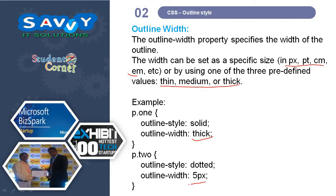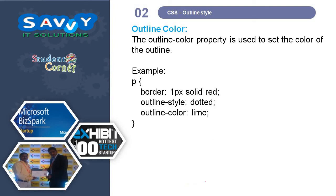These are the two changes for outline width. Remaining units we can also use according to our requirements. The outline color is also similar — the outline color property is used to set the color of the outline. Here outline color I used as lime.